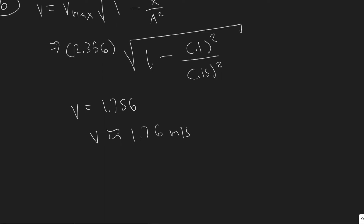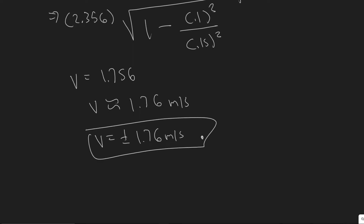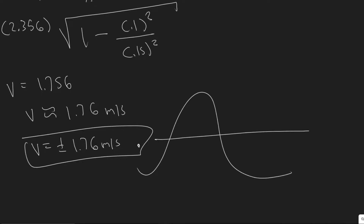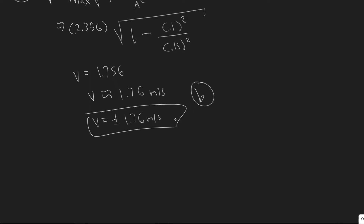Keep in mind that this velocity can be in either direction — from equilibrium moving one way or the other. So we label it plus or minus 1.76 meters per second. Because if it's oscillating, like a wave, it can be going in either direction. So the answer to B is plus or minus 1.76 meters per second.